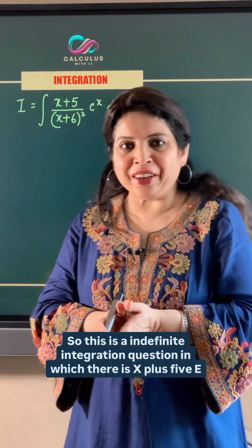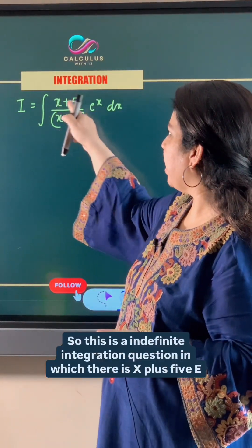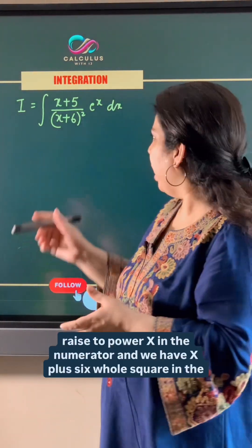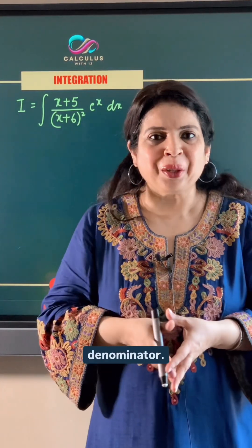This is an indefinite integration question in which there is x plus 5 e raised to power x in the numerator and we have x plus 6 whole square in the denominator.